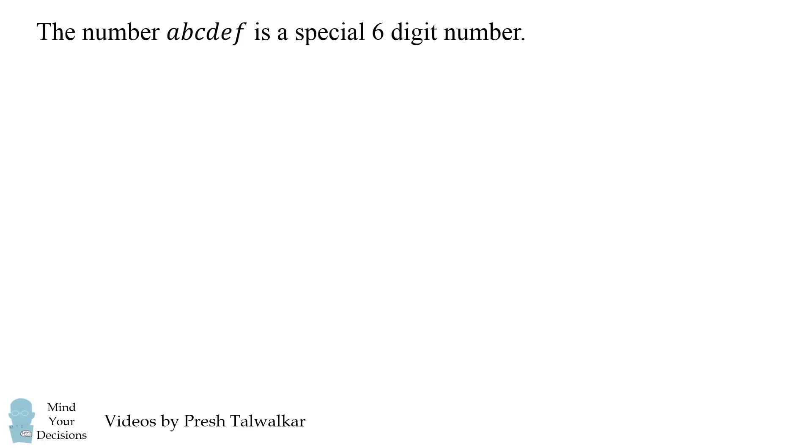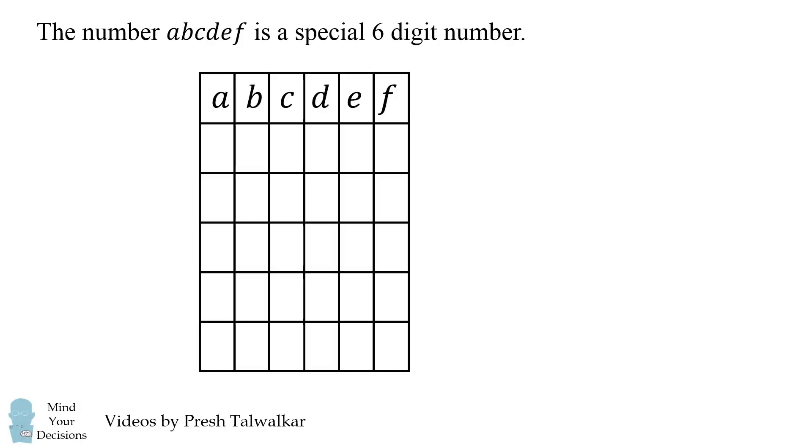The number ABCDEF is a special six digit number. Imagine placing it as the first row of a six by six table. We find the rest of the rows by multiplying the number by 2, 3, 4, 5, and 6.